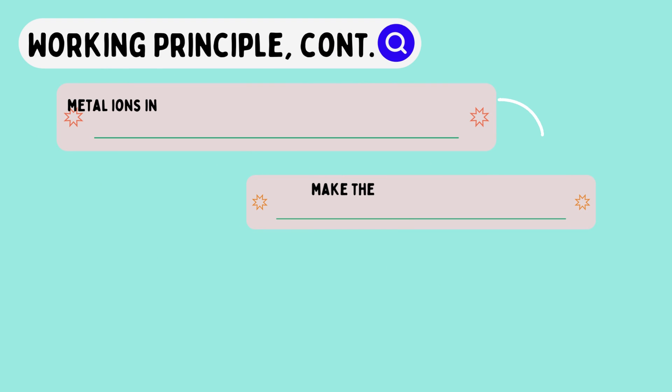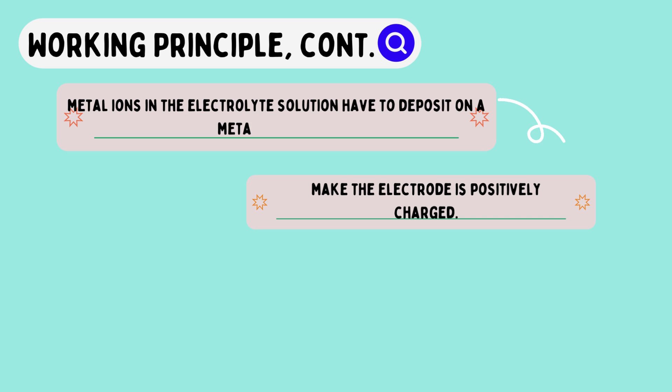At the same time, metal ions in the electrolyte solution have their own tendency to deposit on a metal electrode. As a result, the electrode is positively charged.